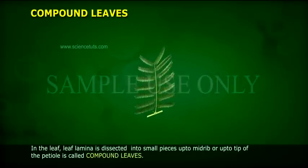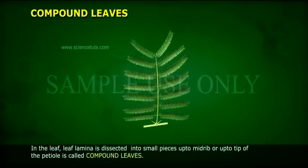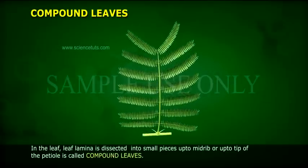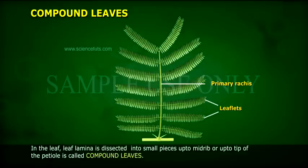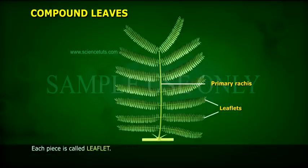Compound leaves: in a compound leaf, the leaf lamina is dissected into small pieces up to the midrib or up to the tip of the petiole. Each piece is called a leaflet.